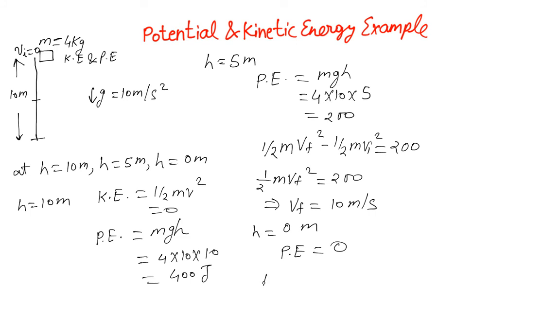So the loss in potential energy as we can see is 400 Joules because we started at 400 and we ended up at 0. And again using the same thing that work done should go in increasing the kinetic energy of the system.